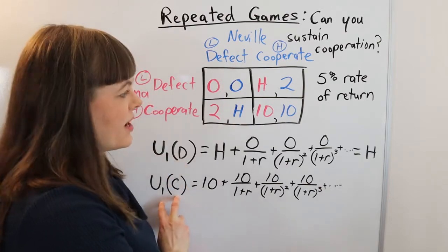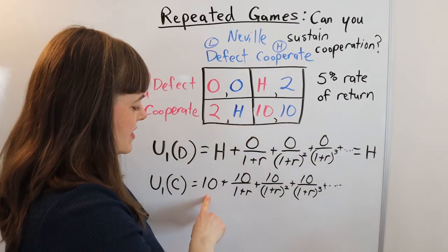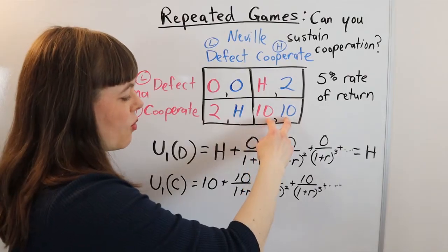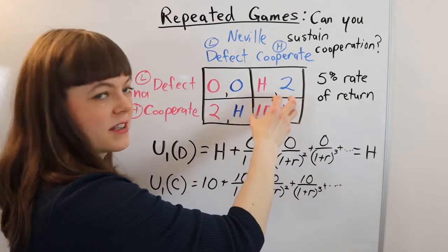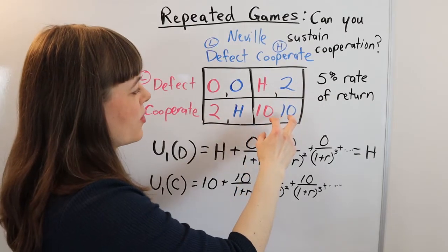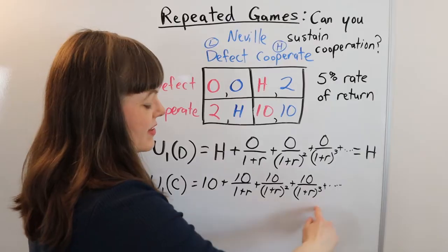So we know if she's going to defect, it's happening now. If she's going to cooperate, then she's going to cooperate forever into the future. In which case she gets 10 today for cooperating and he cooperates, 10 tomorrow, 10 the next day. And he's, you know, doing a grim trigger strategy. So her payoff for sticking with cooperate is given by this equation.